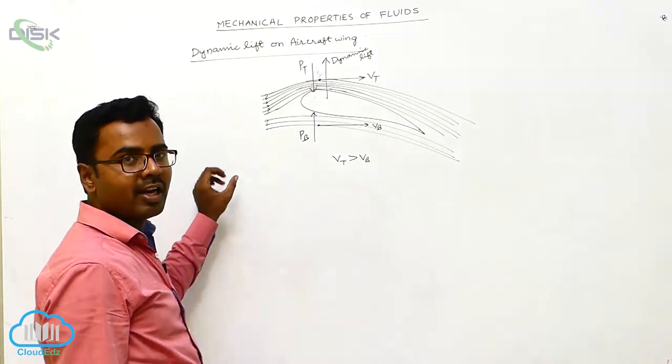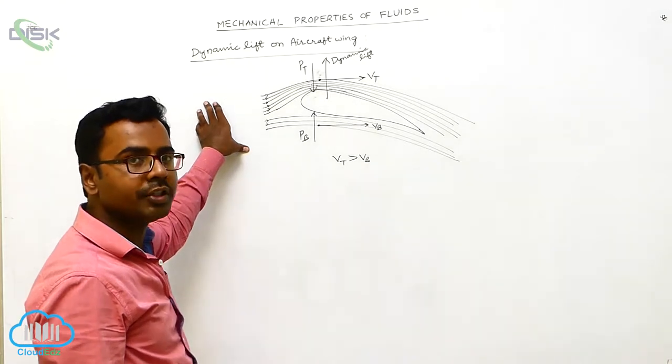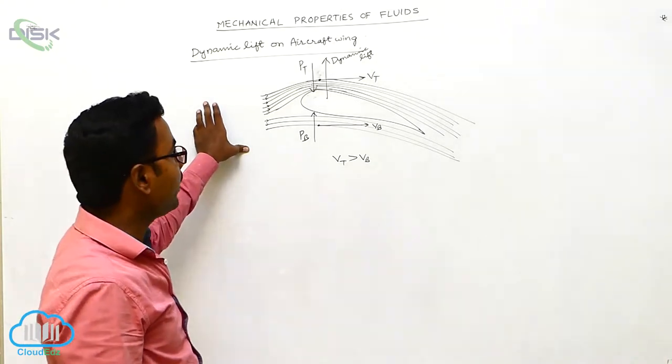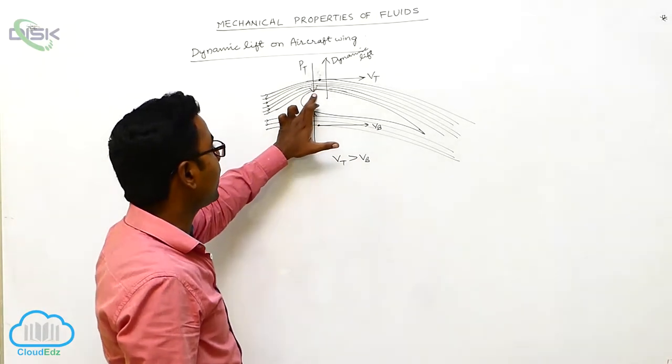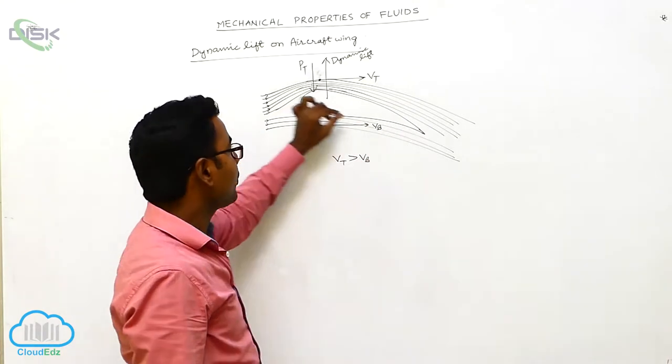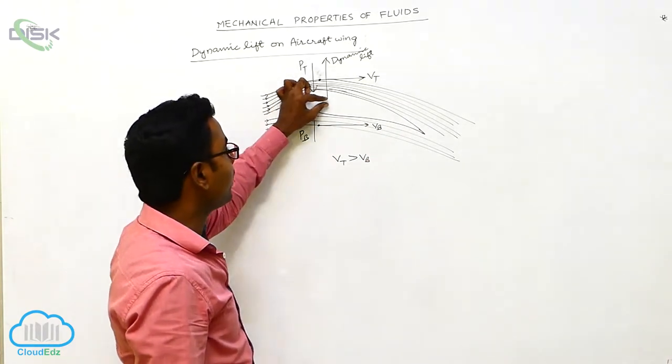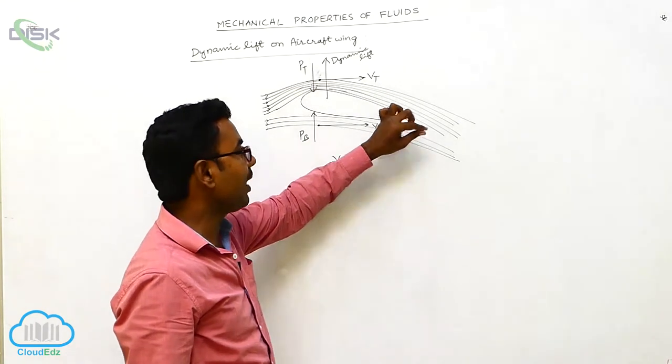Here we study how dynamic lift acts on the aircraft wing. To understand this, first we should know the shape of the aircraft wing. The front edge of the aircraft wing is thick. As we go to the back, the thickness decreases, meaning it is thicker in front and thin at the back edge.